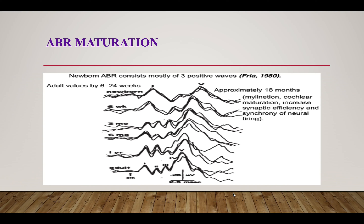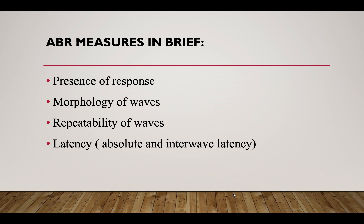The mature form of ABR is reached at approximately 18 months to 2 years of age, because of myelination and cochlear maturation. ABR measures include presence of response, waveform morphology, wave repeatability, and latency — both absolute and inter-wave latency.